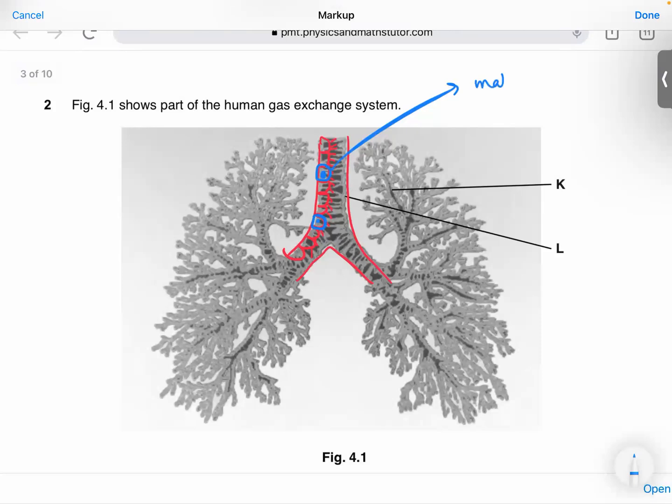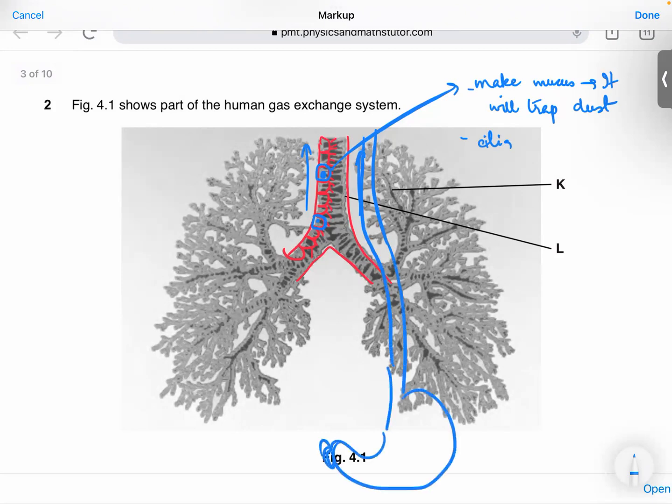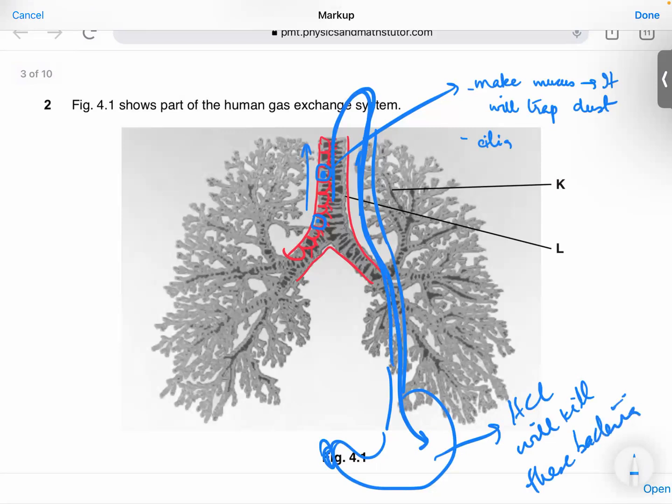The goblet cells will make mucus. So, the mucus will stick to, or in other words, it will trap the dust particles. Once it is trapped, the cilia will sweep it upwards. Upward, why? Because behind it is esophagus. We want to keep it in the stomach. It will go upward, then it will take a U-turn. It will go to the esophagus into the stomach.